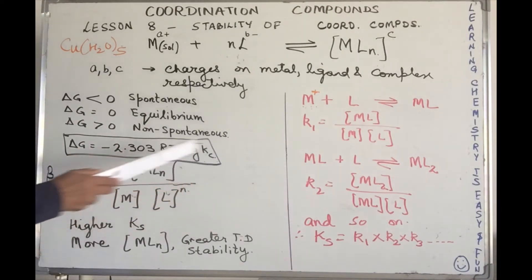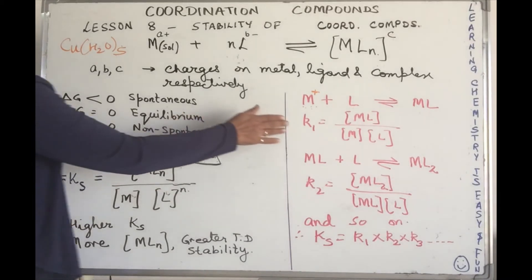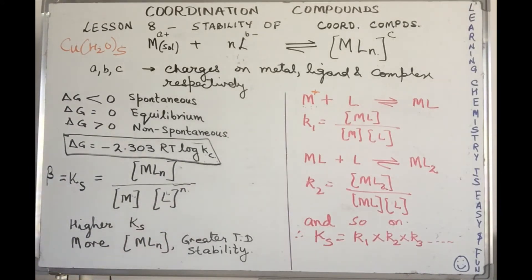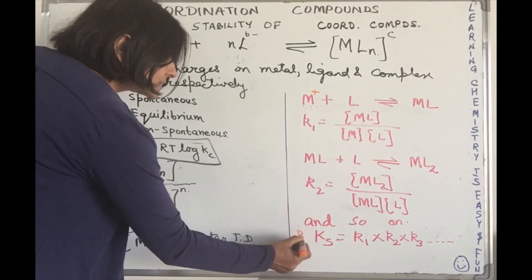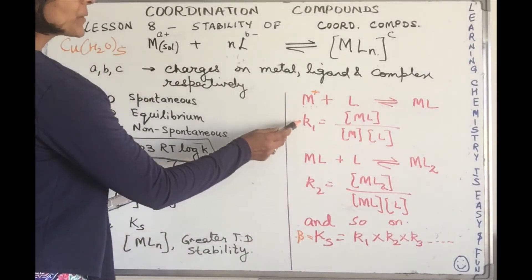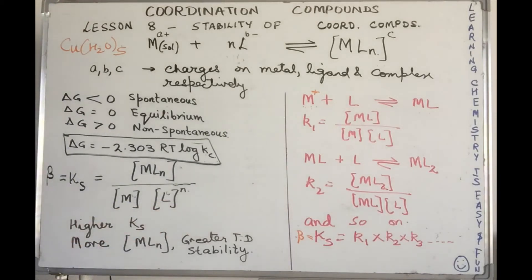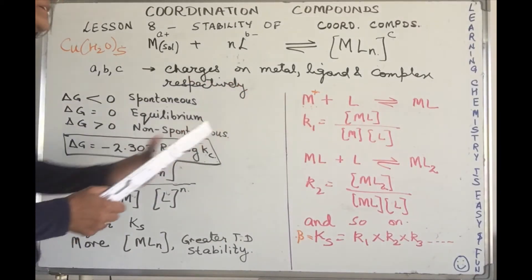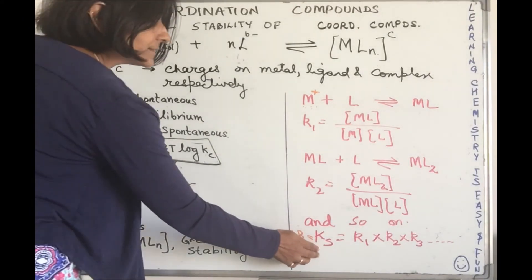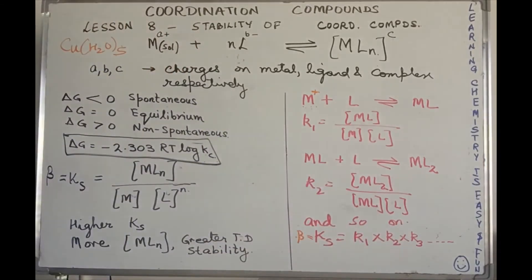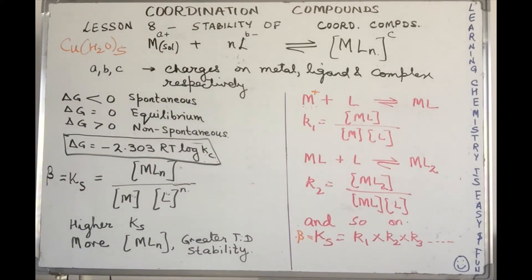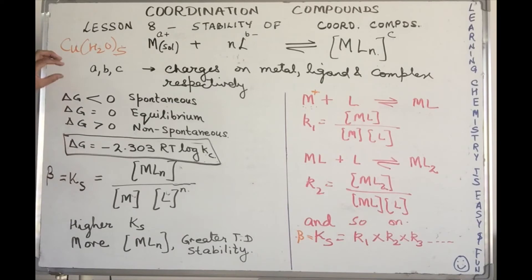Overall, we can depict the relation between the stability constant and the equilibrium constants for each successive step: Ks (or beta) is simply the product of the equilibrium constants for each successive step in the substitution — so Ks = k1 × k2 × k3 × ... and so on. The logic behind studying all this will be made clear as we proceed.